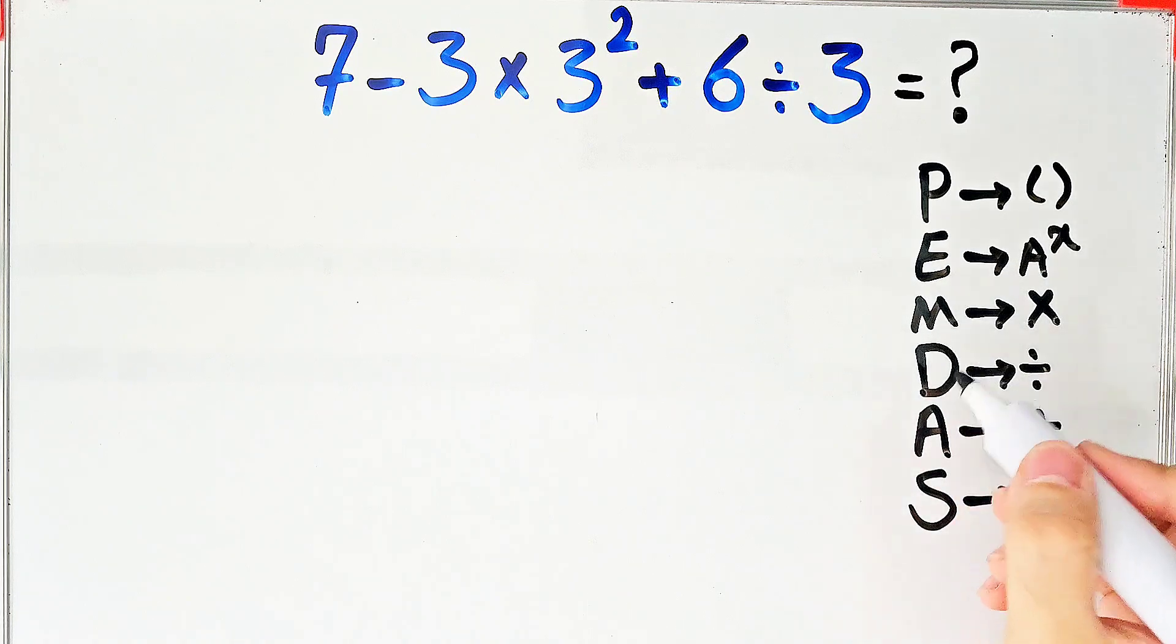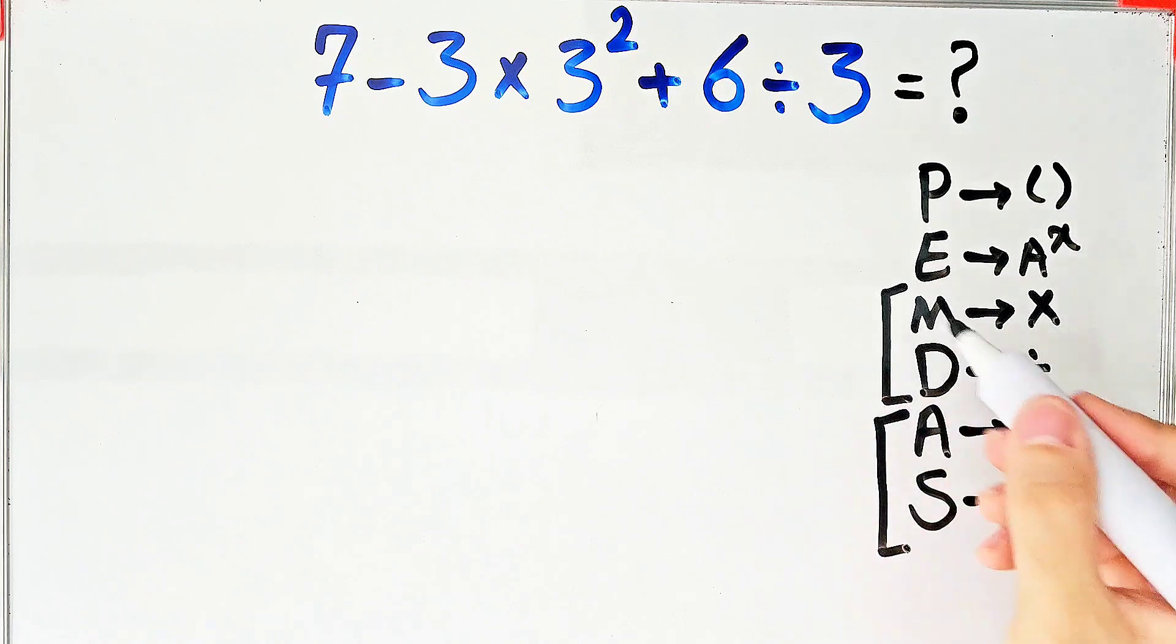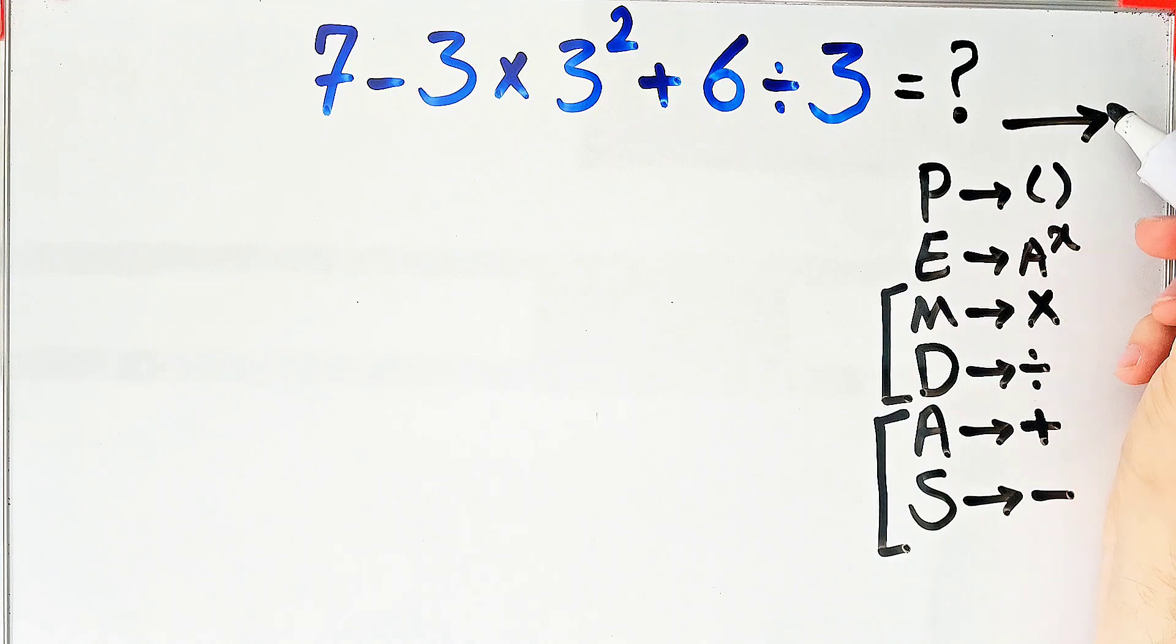Multiplication and division have the same level of priority. Also, addition and subtraction have the same level of priority. When we have both in an expression, we start from the left and simplify the question.